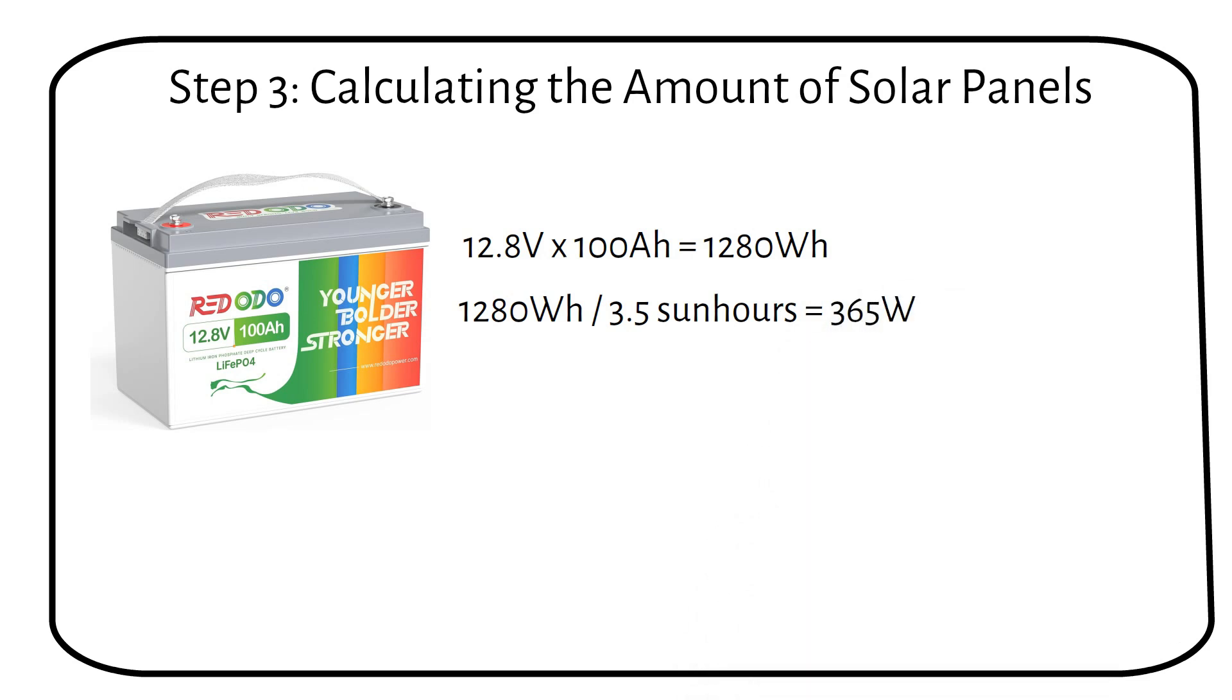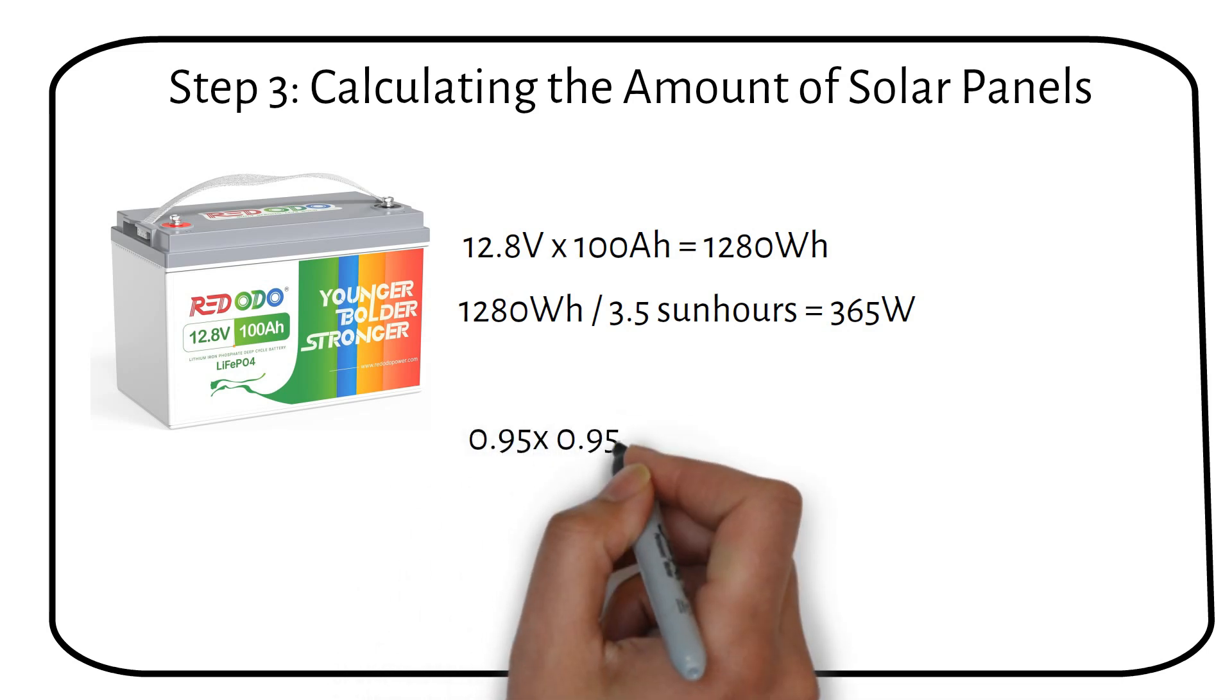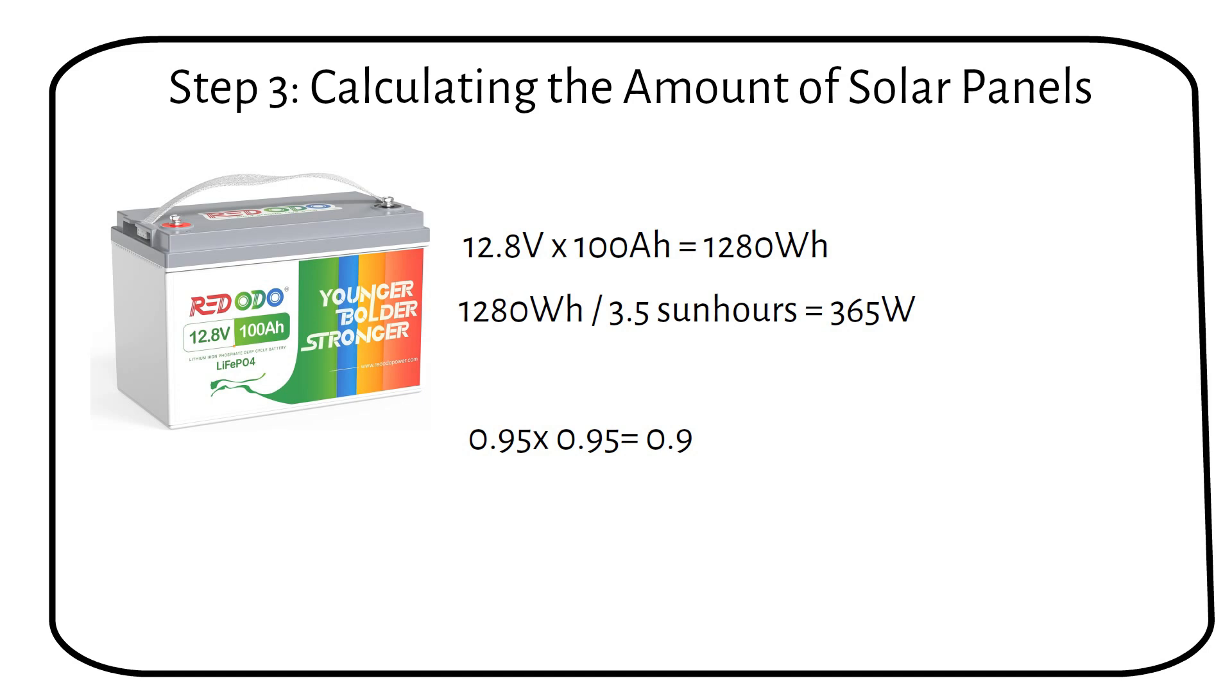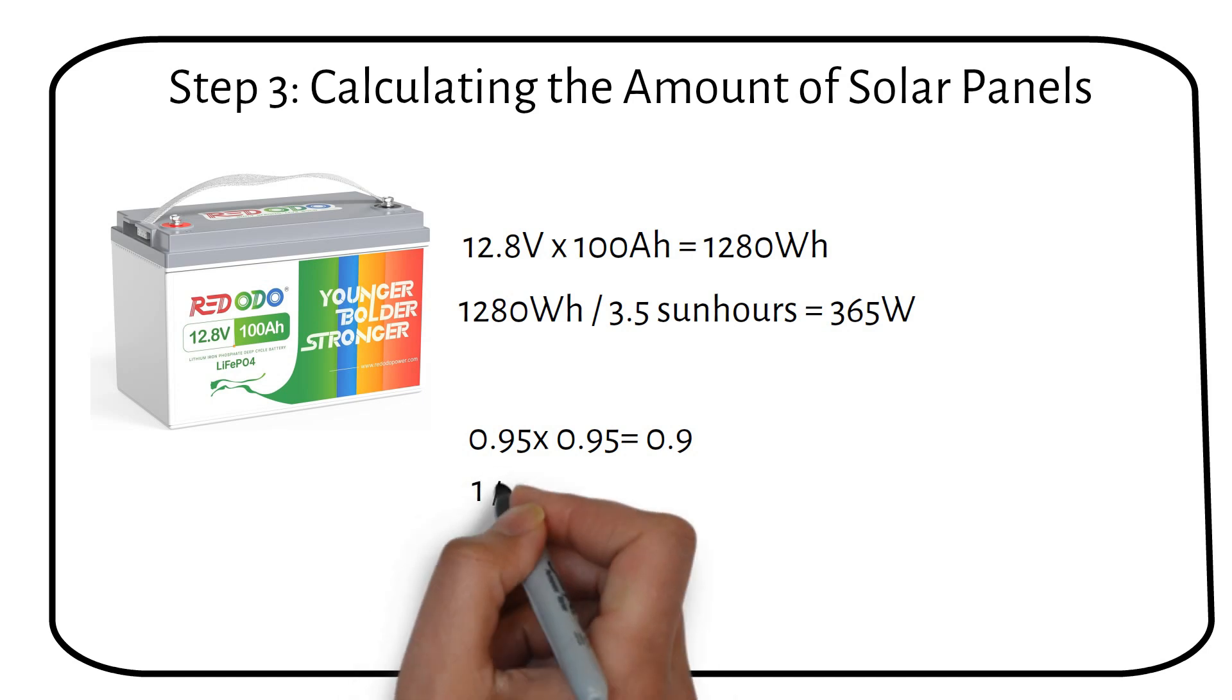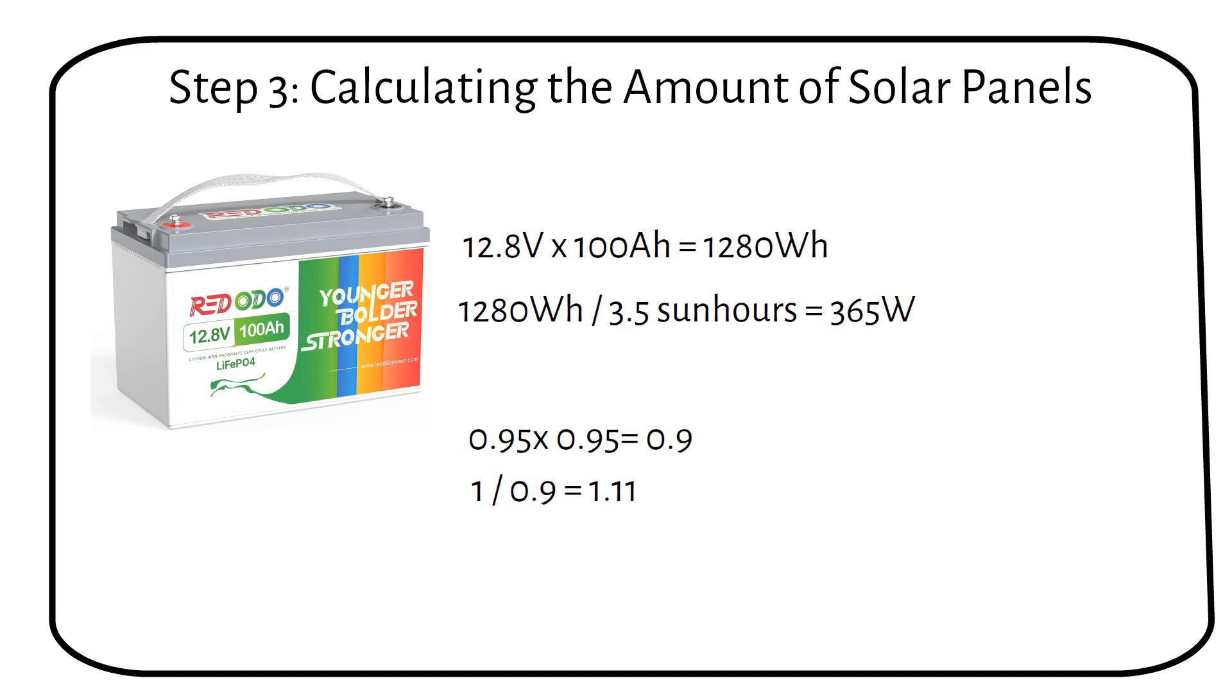Considering the efficiency of the charge controller, which is 95%, and the lithium battery, which is 95% as well, the combined efficiency factor is 90%. So our efficiency factor becomes 1.11. Then we multiply 365 watts by 1.11 to get 400 watts of solar panels.